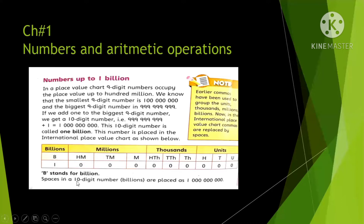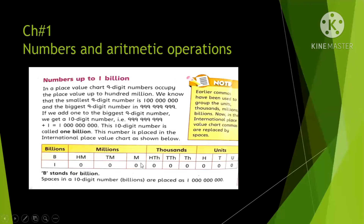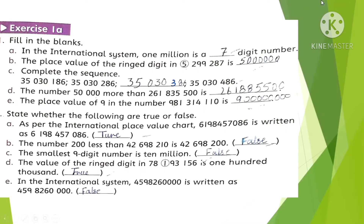Now we move forward to Exercise 1A, Question 1: Fill in the blanks. In the international system, one billion is a ten-digit number, as we have seen in the place value chart. The place value of the ringed digit in this number is 500 billion.